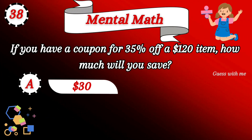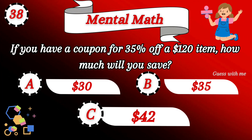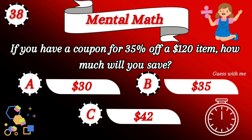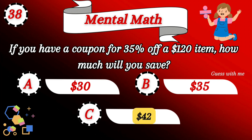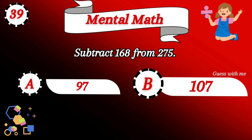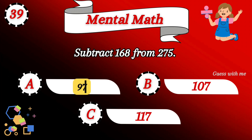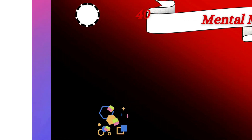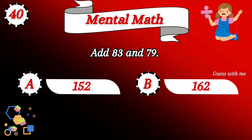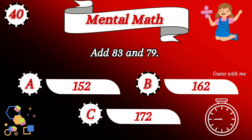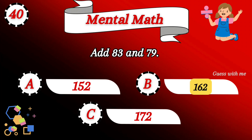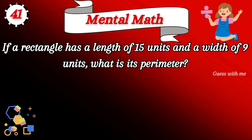Option C is the right answer — 20 days. Here is the next mental math challenge: option C is the right answer. Subtract 168 from 275 — the answer is 97. Question number 40: add 83 and 79 — 162 is the right answer.